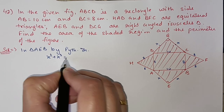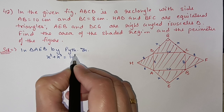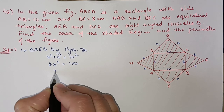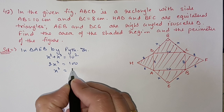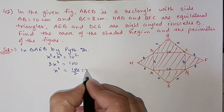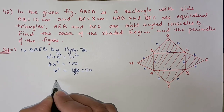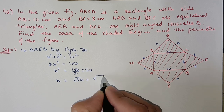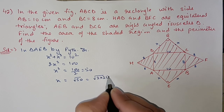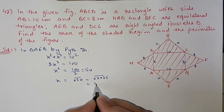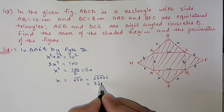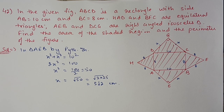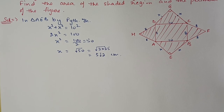To find x, we use Pythagoras' theorem in triangle AEB: x² + x² = 10², so 2x² = 100, giving x² = 50. Therefore x = √50 = √(2 × 25) = 5√2 centimeters.